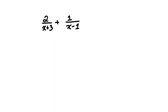In order for us to add two rational expressions, we need to create a common denominator. And in order to create the common denominator, we need to multiply the existing expression by the missing factor. So in the first expression, the denominator is x plus 3. In the second expression, the denominator is x minus 1. The common denominator will be the product of all existing factors, x plus 3 and x minus 1.